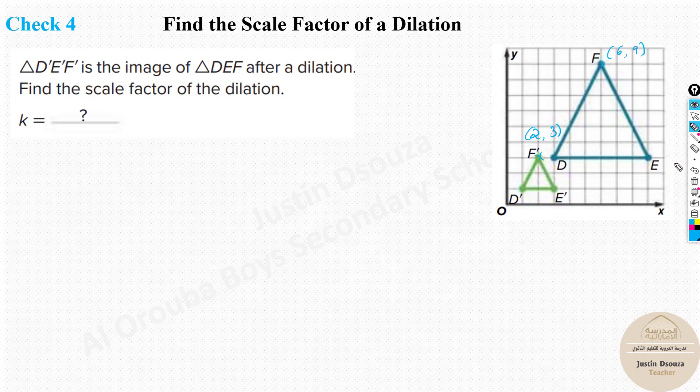Now all you need to do is write K equals F dash by F. Always it's the dilated image divided by the original image. X coordinate and y coordinate separately. X coordinate is 6 by 2, that is 3. Oh sorry, this is the dilated image, it's 2 by 6. So let me just rewrite it. Always remember it's the dilated image divided by the original image, so it is 2 divided by 6, that is one third.